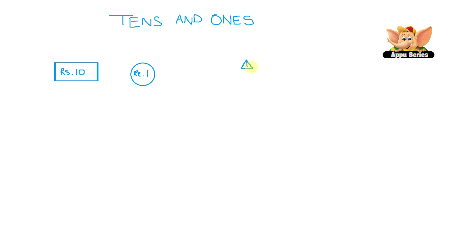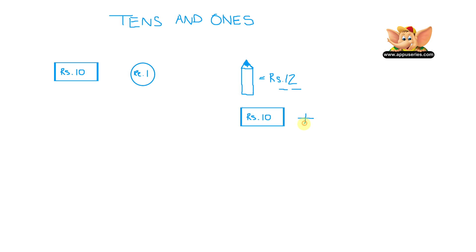Let's say you went to a store to buy a pencil which was for rupees 12. How many notes and coins would you give the shopkeeper? The number 12 has one 10 and two 1s. So for the 10, we have one 10 rupee note, and for the two 1s, we'll use two 1 rupee coins. So 10 plus 2 gives us rupees 12.